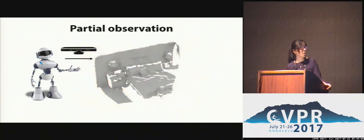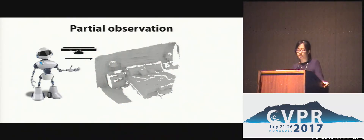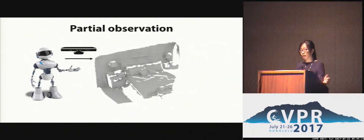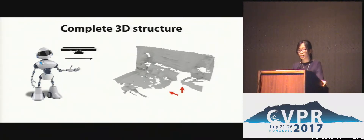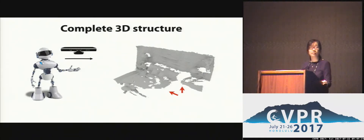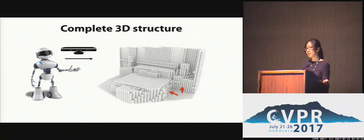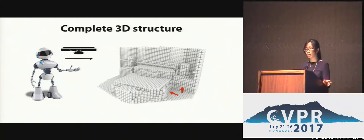However, with a robot's own RGBD camera, what it can see is actually really limited. Although this data provides information on the visible surface, there is still a large unknown 3D space caused by occlusion and limited viewpoints. And many of the tasks here require knowing the information on those missing regions. Therefore, it is really beneficial for the robot to be able to predict the full 3D structure of the environment based on partial observation.